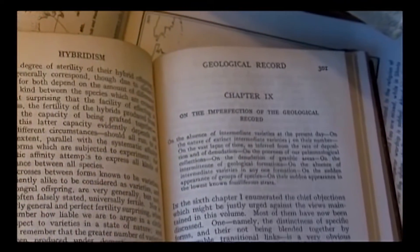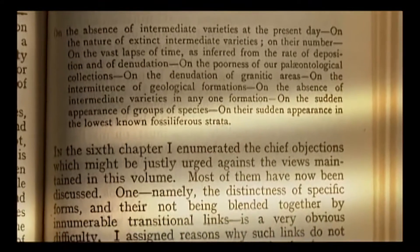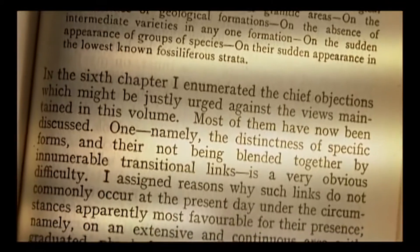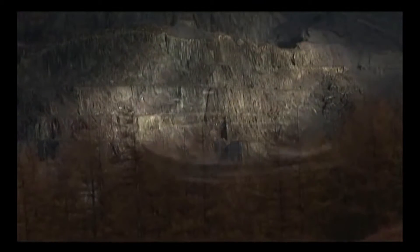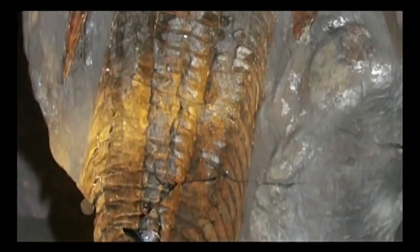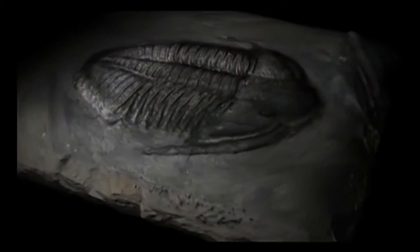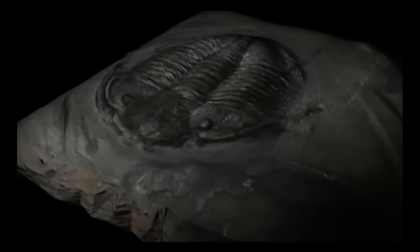Yet despite the clarity and detail of his argument, Darwin acknowledged a problem that defied explanation: the Cambrian fossil record. 'The distinctness of specific forms, and their not being blended together by innumerable transitional links, is a very obvious difficulty. I allude to the manner in which species belonging to several of the main divisions of the animal kingdom suddenly appear in the lowest known fossiliferous rocks.' It was well known at the time that the first fossils of animals appeared suddenly without precursors in the geological record, creating a deep conflict between what his theory told him to expect — an abundance of transitional forms — versus what was there in the fossil record.